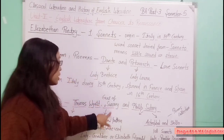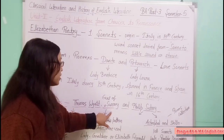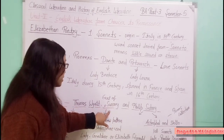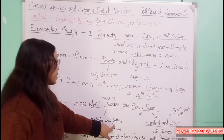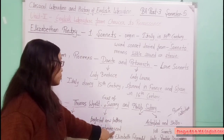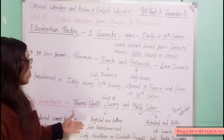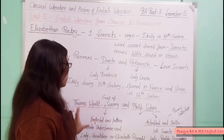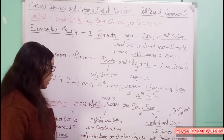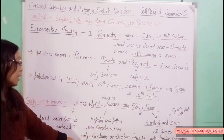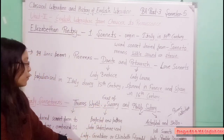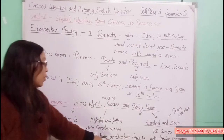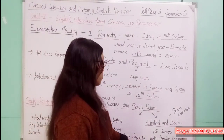The Earl of Surrey's real name is Henry Howard. He perfected a new pattern in the sonnet form which Shakespeare later used. The Earl of Surrey added some new patterns to the sonnet form which Shakespeare subsequently adopted. He dedicated his sonnets to Lady Geraldine, also known as Elizabeth Fitzgerald.